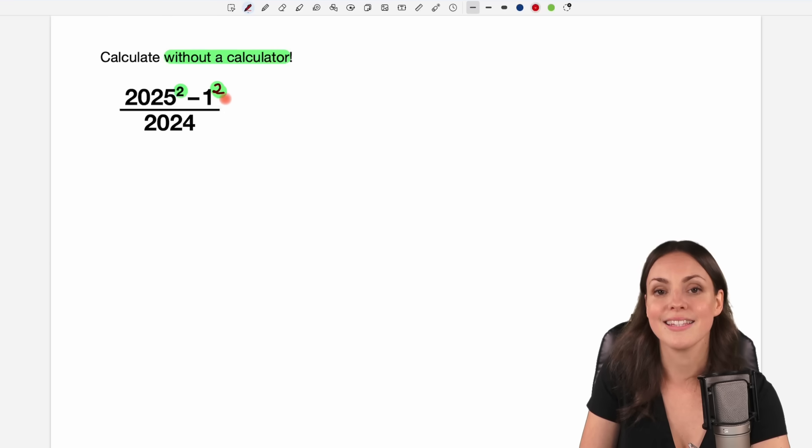This is the difference of squares. So if we have something like a squared minus b squared, what do we have here? Something squared minus something squared.